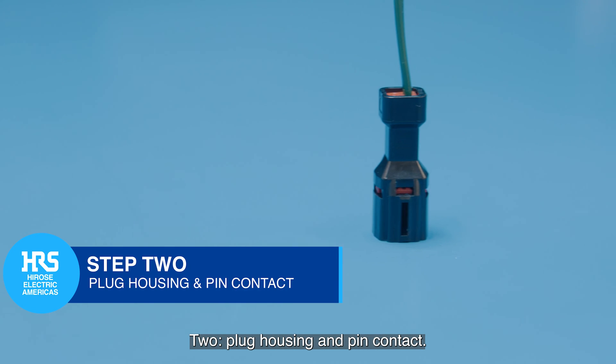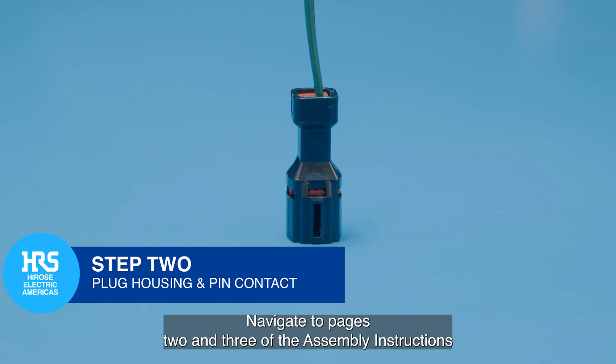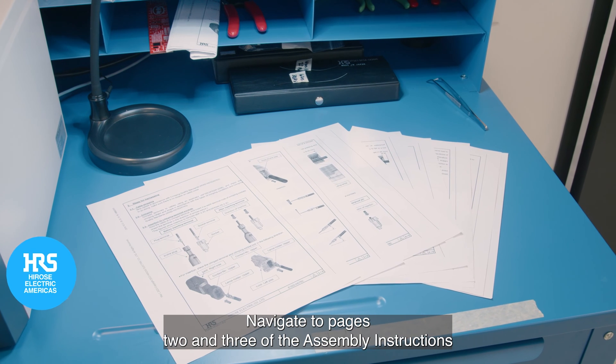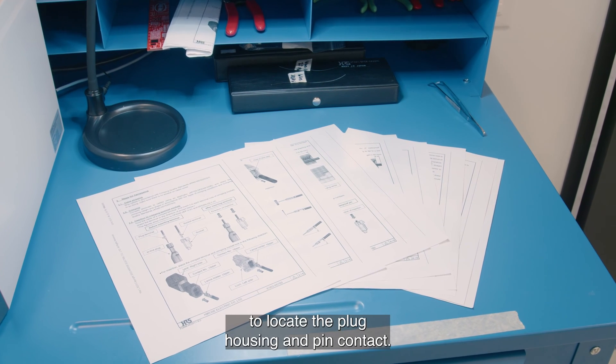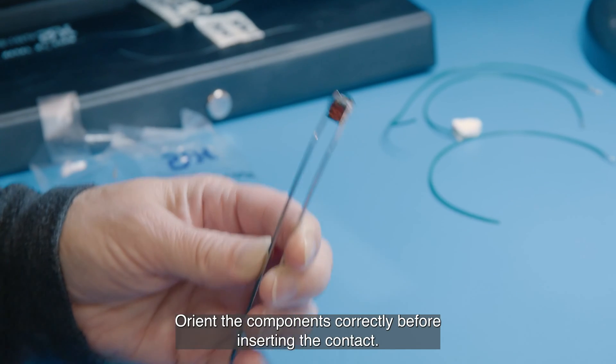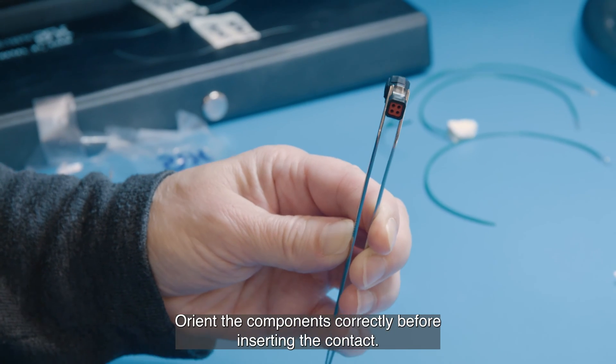2. Plug Housing and Pin Contact. Navigate to pages 2 and 3 of the assembly instructions to locate the plug housing and pin contact. Orient the components correctly before inserting the contact.